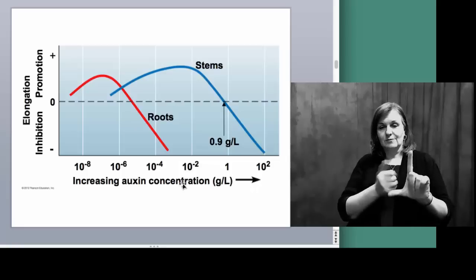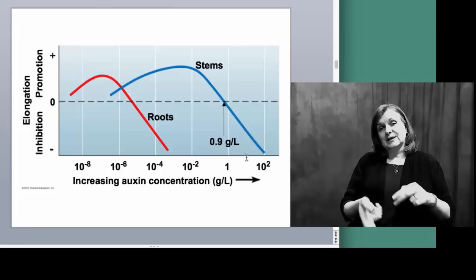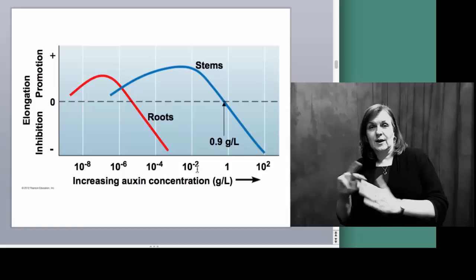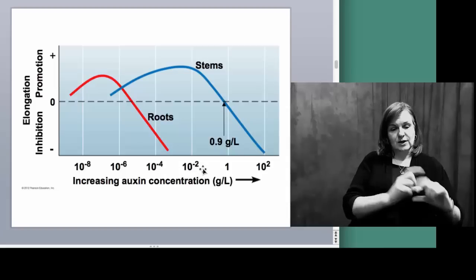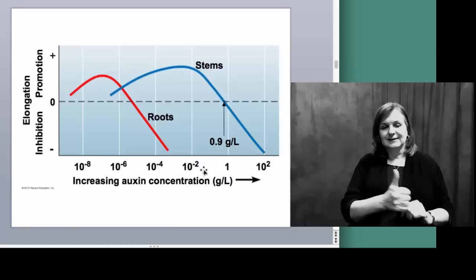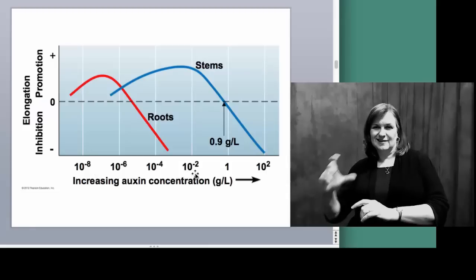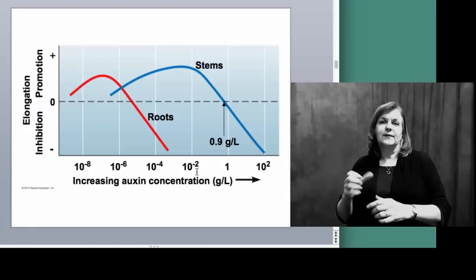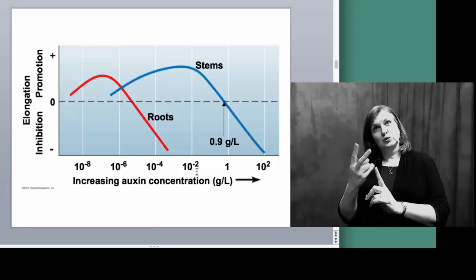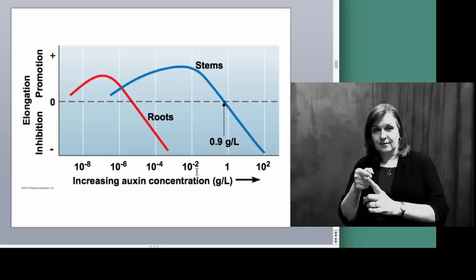We have an increasing auxin concentration from left to right. Keep in mind the minus 8, minus 6, minus 4, minus 2 — that's increasing concentration because our numbers are getting larger. 10 to the minus 8 is a very small number; 10 to the minus 2 means two decimal places to the right of your decimal point.